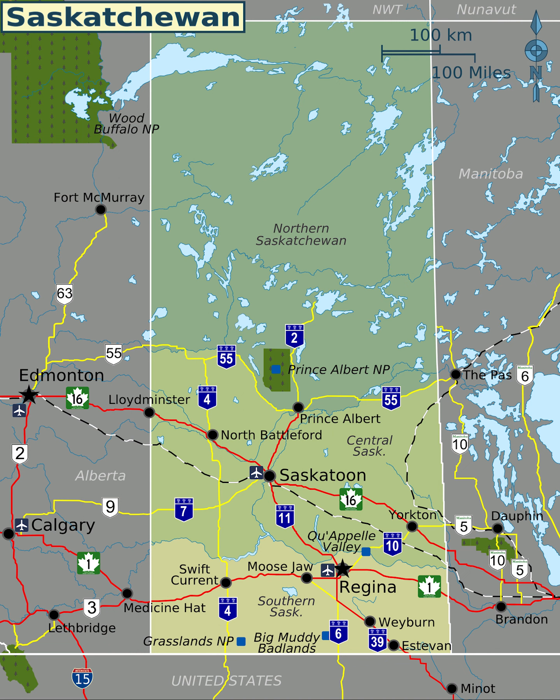They are separated by an aspen parkland transition zone near the North Saskatchewan River on the western side of the province, and near to south of the Saskatchewan River on the eastern side.